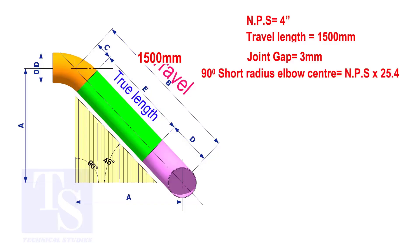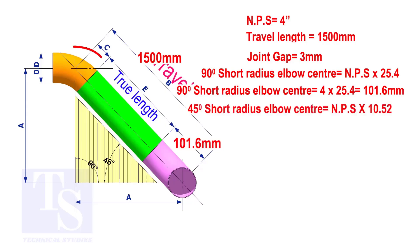To calculate the elbow center of a 90 degree short radius elbow, multiply the nominal pipe size by 25.4. The answer is 101.6 millimeters. To calculate the elbow center of a 45 degree short radius elbow, multiply the nominal pipe size by 10.52. The answer is 42.1 millimeters.